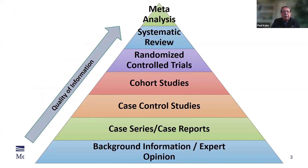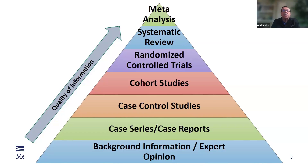There's a little diagram that appeared, and from the bottom going up, in terms of the quality of information: case series, case control studies, cohort studies, and then what's considered the gold standard of research - randomized controlled trials. However, meta-analysis or a systematic review with meta-analysis is placed at the top. What I hope to do is illustrate that that's probably not the case, and that you should be pretty skeptical of a meta-analysis.